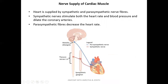Cardiac muscle receives autonomic nerve supply composed of sympathetic and parasympathetic components. The sympathetic system is derived from thoracic spinal segments T1 to T4 via the sympathetic ganglion. The parasympathetic supply is via the vagus nerve. The parasympathetic system decreases heart rate, while the sympathetic system increases heart rate and blood pressure.